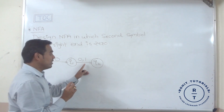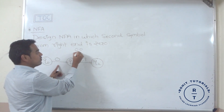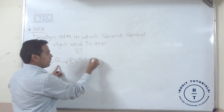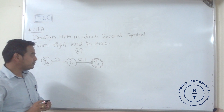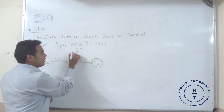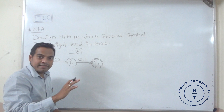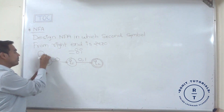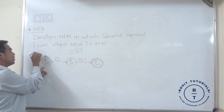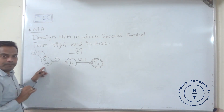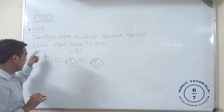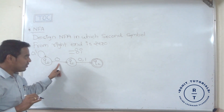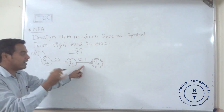This is the final state obtained by considering the minimum string. Before this zero, any number of zeros or ones may appear. So at q0, we represent a self-loop for input symbol zero or one, because any number of zeros or ones can appear before the required zero, followed by either zero or one at the end.